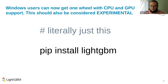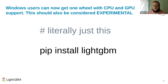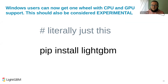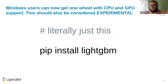Another feature coming in 3.2.0 is a single wheel for both CPU and GPU support in the Python package. This should be considered experimental and currently only works on Windows — you just run pip install lightgbm, and as long as you have the right OpenCL stuff installed, you get one wheel that works for both GPU and CPU. We're looking to develop this further for a wider range of GPUs. This was contributed by an outside contributor, not a maintainer — really exciting work.